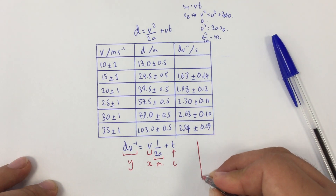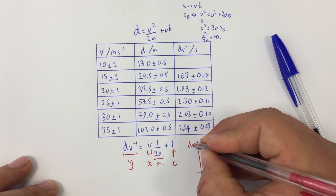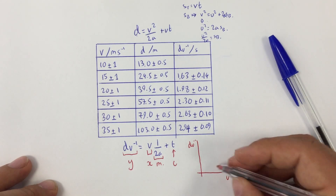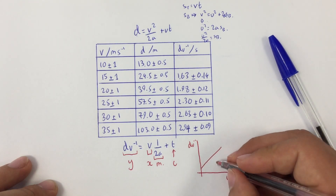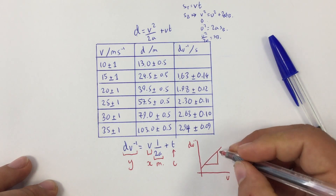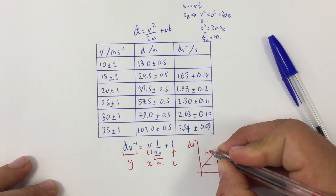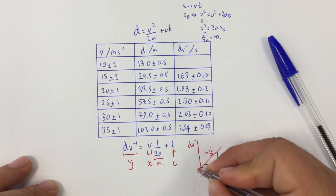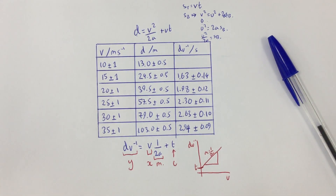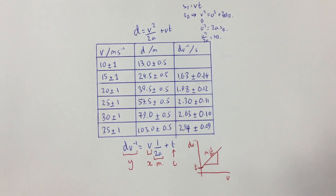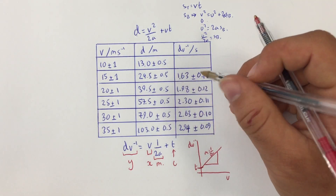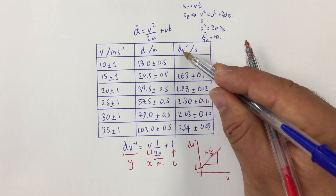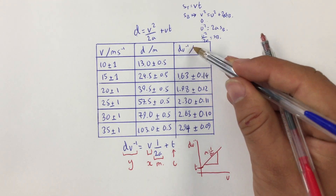The graph will have d·v⁻¹ on the y-axis and v on the x-axis. My gradient, when I calculate it, will be equal to 1 over 2a, and my y-intercept will be my thinking time t. We almost have all the data we need, but we do need to calculate d·v⁻¹, which is literally d divided by v.